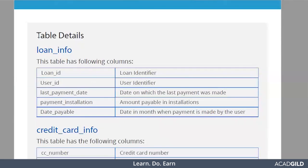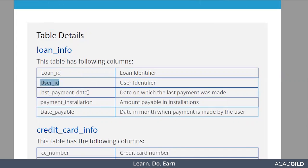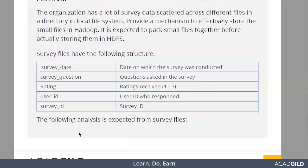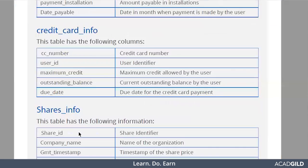Now let's look at the table details. As mentioned earlier, there are three different tables: loan_info, credit_card_info, and shares_info. For loan_info, there are five columns: Loan ID (unique), User ID (unique), Last Payment Date (date on which the last payment was made against the loan), Payment Installment (amount payable in installments), and Date Payable. Similarly, credit_card_info and shares_info each have their own set of columns.